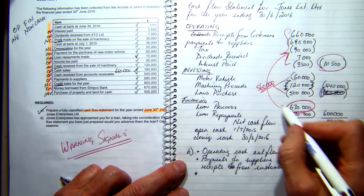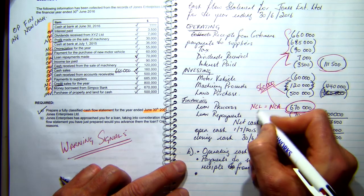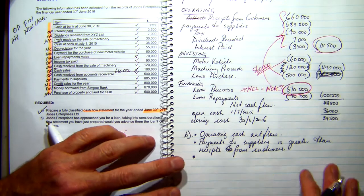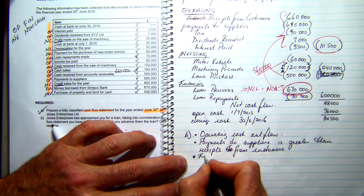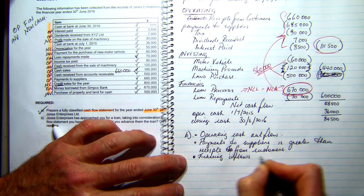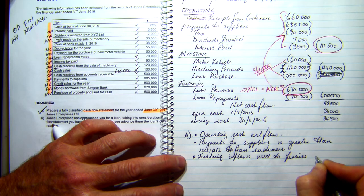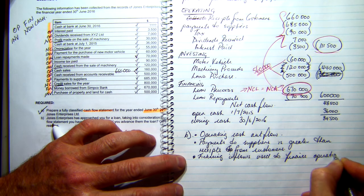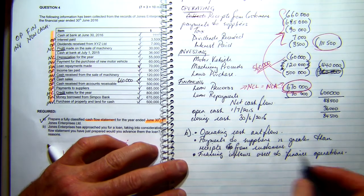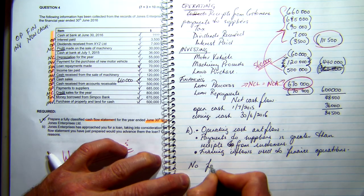Loan proceeds should be used for non-current assets — financing inflows should equal investing outflows. Instead, financing inflows are being used to finance operations. This is a major warning signal. If you're borrowing money to pay your employees and suppliers, you're soon going to be out of business. So would I advance a loan to Jones Enterprises? No, for the above reasons.